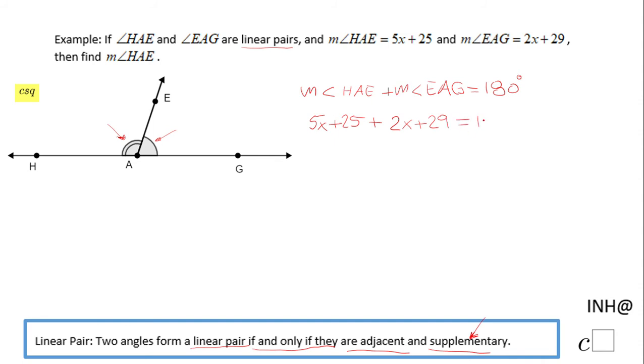And equals 180. You notice here we have an algebraic equation. This was the geometry and now we move to algebra. We're gonna combine the like terms here: 5x plus 2x, that is 7x. 25 plus 29, that is 54 equals 180.